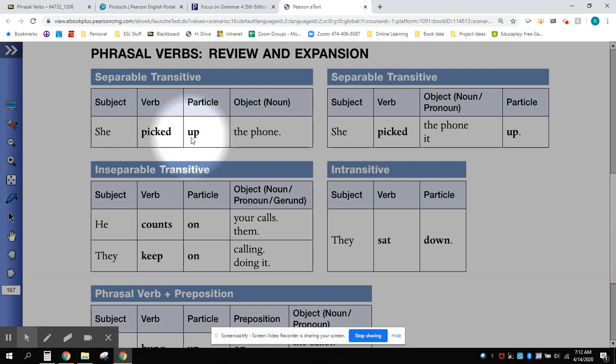A particle looks like a preposition, but it doesn't function as a preposition when we are talking about phrasal verbs. There are two types of phrasal verbs, separable and inseparable.